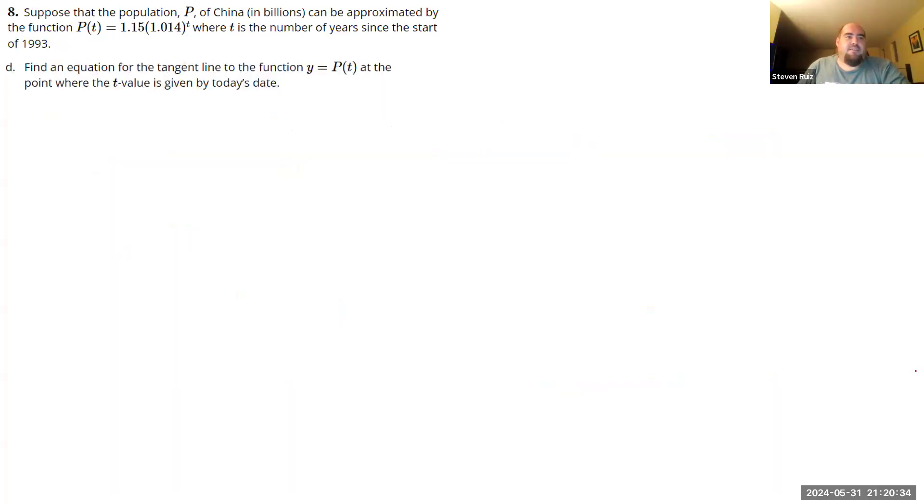All right, moving on to part D. Find an equation for the tangent line to the function. Okay, so we want to find the equation of the tangent line. So that's going to be a couple of forms we could give that in. Y equals mx plus b, so slope-intercept form, or if you'd rather, we can do point-slope form. So y minus y1 equals m times x minus x1. So let's start filling in these details here. I want the equation for a tangent line of the function at the point where the t value is given by today's thing.